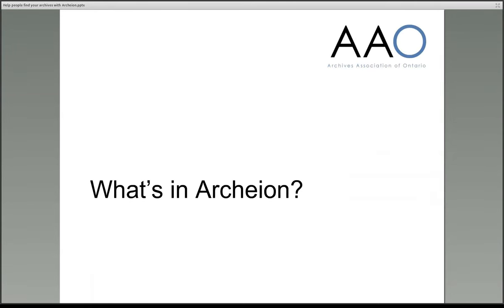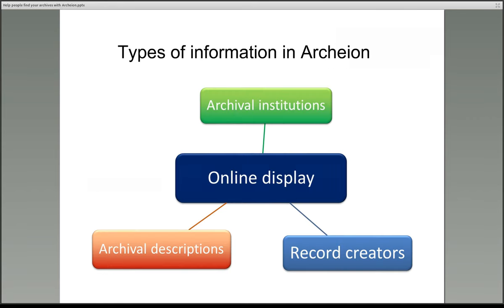So, what information goes into Archeon? There are three main types of records in the service: information about your archival institution, information about the records you hold — the archival descriptions — and also authority records, which hold information about the people who created the records: individuals, organisations or families. These are all combined into the online display.